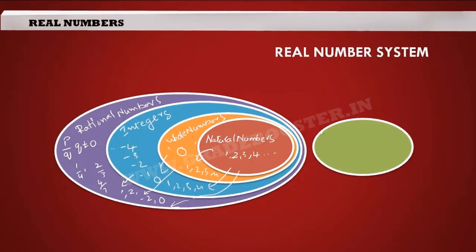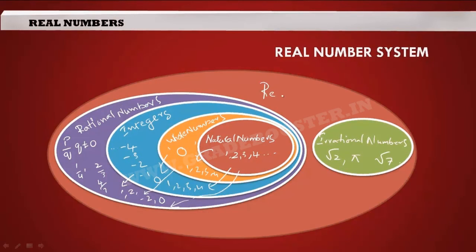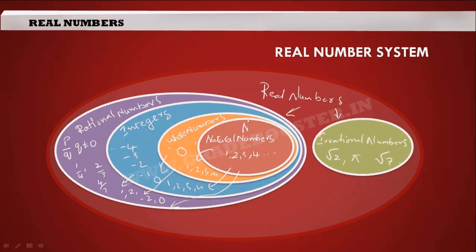There is another set of numbers which are not rational, called irrational numbers. Examples of irrational numbers are √2, √5, √7, etc. Rational numbers and irrational numbers are the two parts of the real number system. Natural numbers are denoted by N, whole numbers by W, integers by Z, rational numbers by Q, and irrational numbers by Q'.